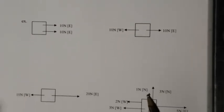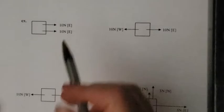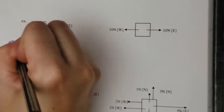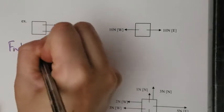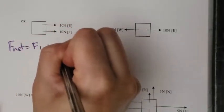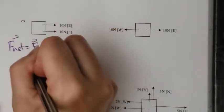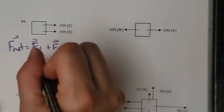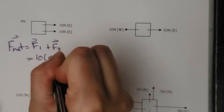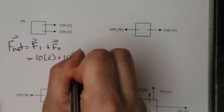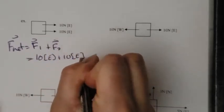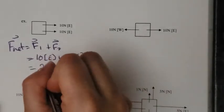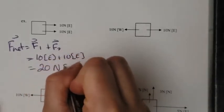So what I would like to do is a couple examples here. So in this example here, I have a force. I'm trying to figure out the Fnet. Fnet will be force one plus force two. And I have 10 Newtons east plus 10 Newtons east. So 10 east plus 10 east will give me a total of 20 Newtons east.